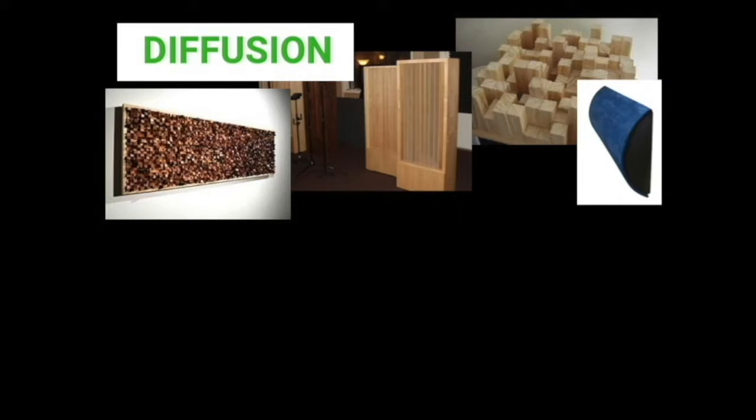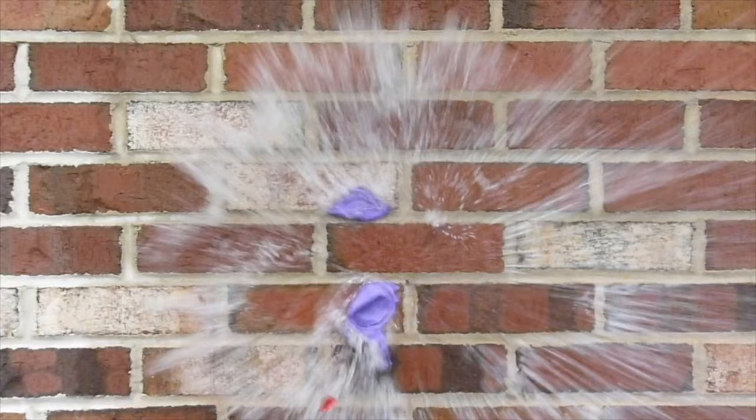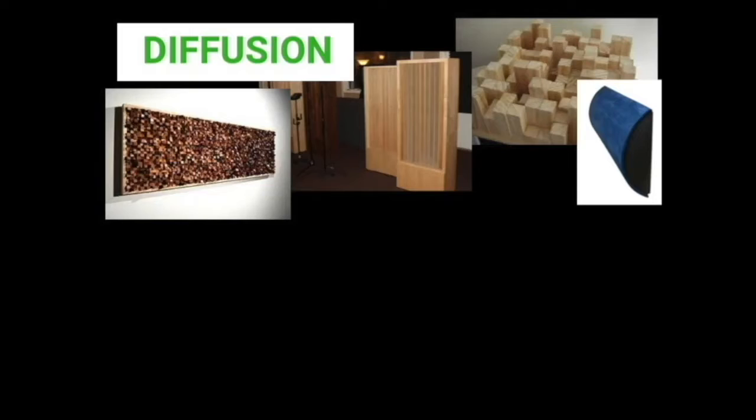So the idea for diffusion is somewhat similar, but instead of a water balloon hitting a brick wall, imagine sound hitting a diffuser, breaking apart and being dispersed in all directions. And since dispersed sound has less energy than direct sound, it will have less presence in a recording. And this means you'll get less of an echo effect.